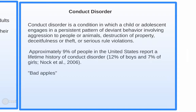Another childhood disorder is conduct disorder, in which a child has engaged in a persistent pattern of deviant behavior involving aggression to people or animals, destruction of property, deceitfulness, or serious rule violations. Approximately 9 percent of people suffer from this disorder over their lifetime. Essentially, certain people have dysfunctional parameters for society. Conduct disorder diagnosed in children tends to manifest as even worse disorders in adulthood, including criminal behavior.